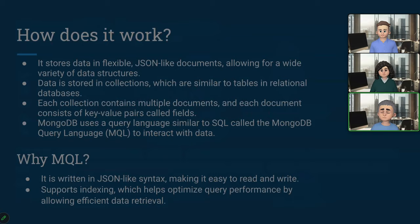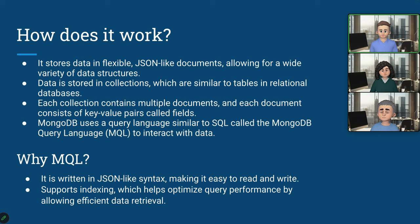Now we wanted to tell you a little bit about how MongoDB actually works. It stores data in flexible JSON-like documents, as Gabby told us earlier, which allows a wide variety of data structures. Data is stored in collections, which are similar to tables in relational databases. Each collection contains multiple documents, and each document consists of key-value pairs called fields. MongoDB uses a query language similar to SQL called MQL — MongoDB Query Language. It is written in JSON-like syntax, making it very easy to read and write. It also supports indexing, which helps optimize query performance by allowing efficient data retrieval.